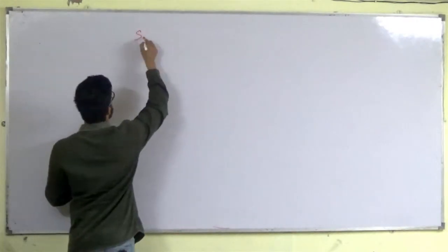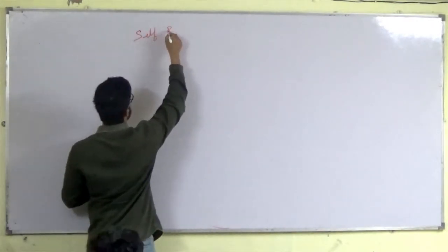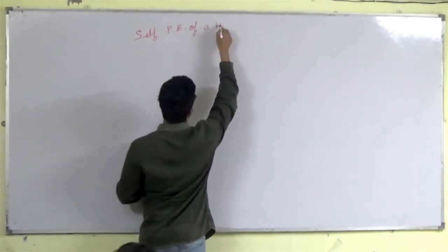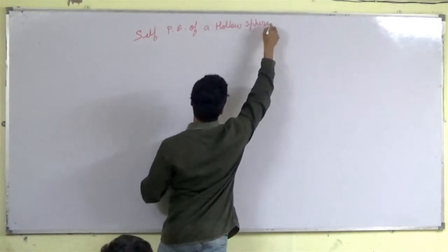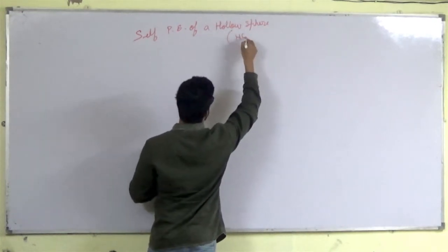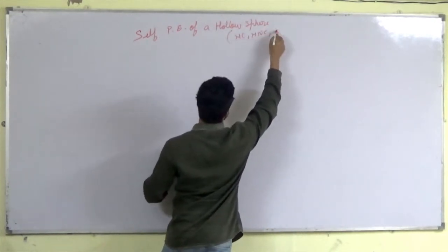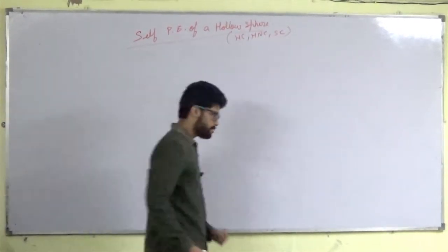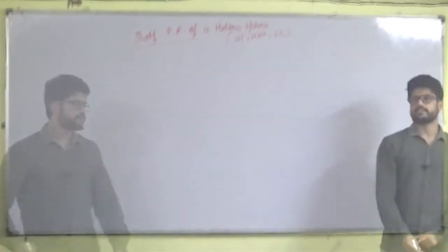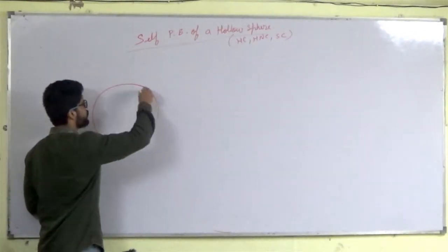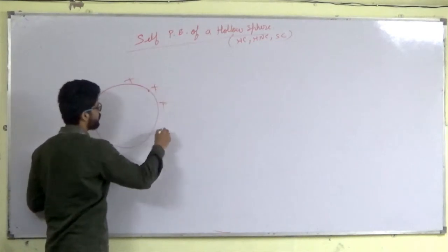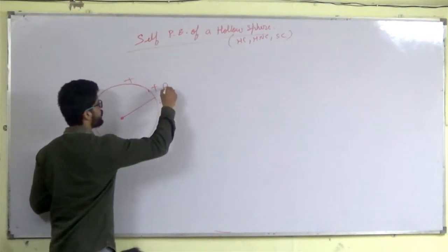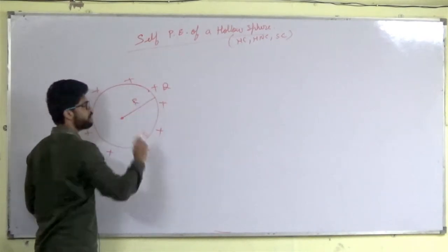Let's look at the self-potential energy of a uniformly charged hollow sphere — hollow conducting, hollow non-conducting, and solid conducting. What does self-potential energy mean? We have a hollow sphere uniformly charged with plus Q, with radius capital R.